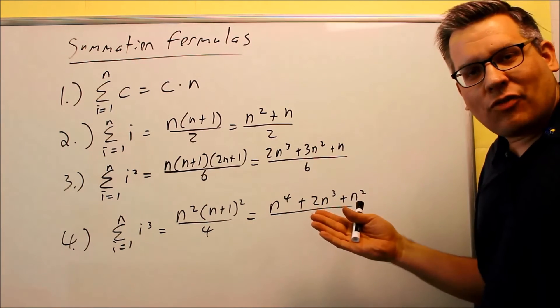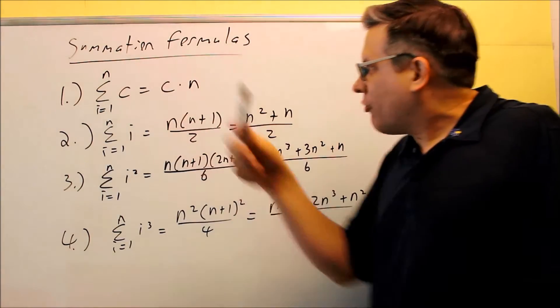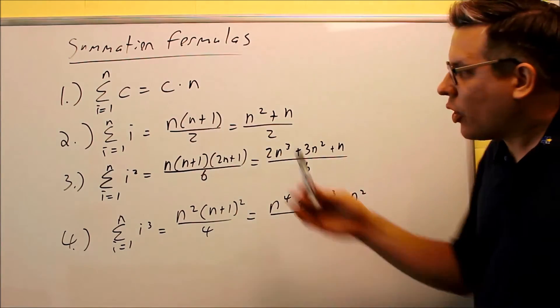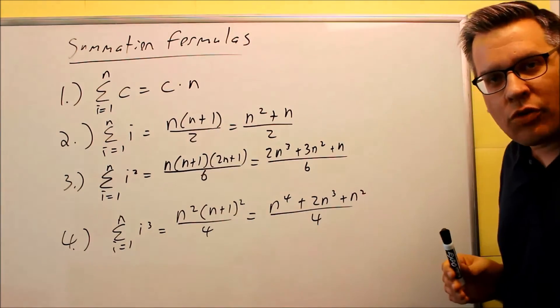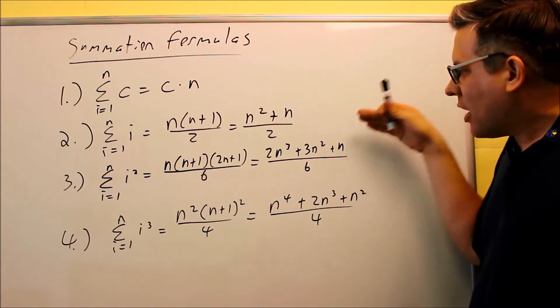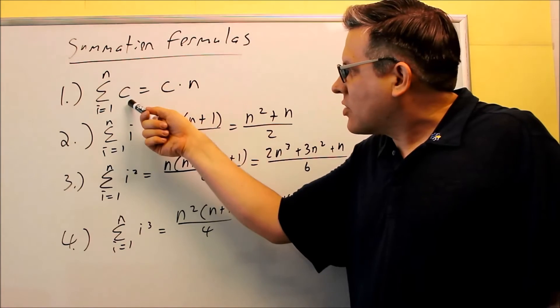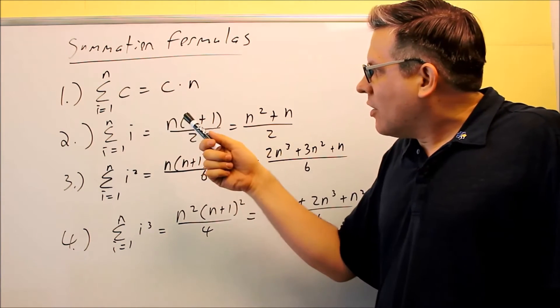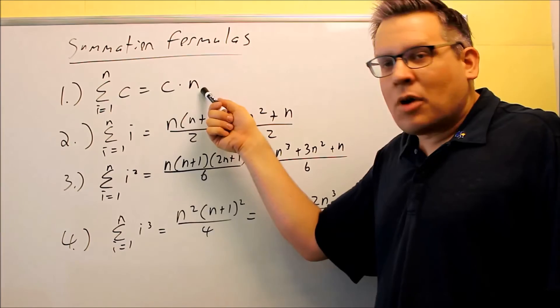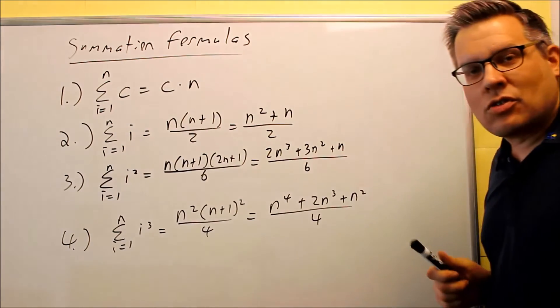So if n is a very large number, like n is going from 1 to 100 for instance, you don't want to have to add this 100 times all the way through. So these formulas make it easier to tell what the sum actually is. So if you have a constant that's here and you're going from 1 to n, all you're going to do is take the constant and multiply it by n—that's going to give you the total sum.